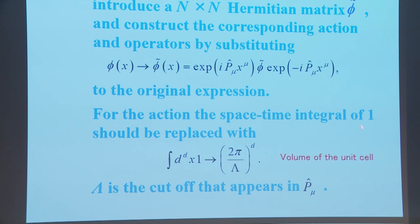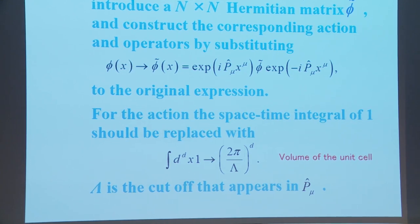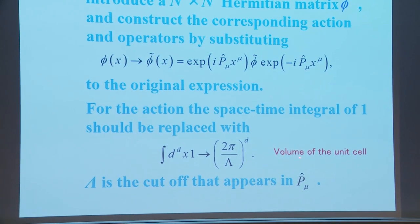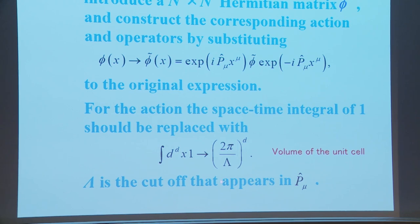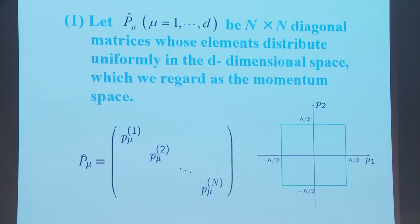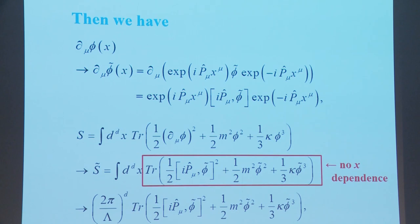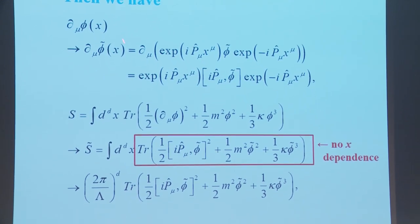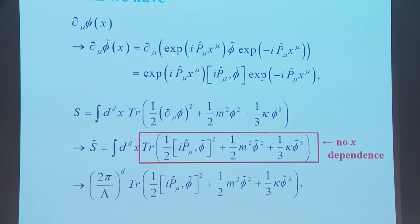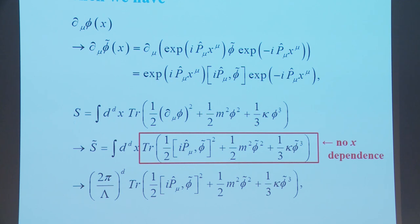For the action, the space-time integral of 1 should be replaced with a specific expression — (2π/Λ)^{2d} is the volume of the unit cell, where Λ is the cutoff appearing in P_μ. Then ∂_μφ is replaced by ∂_μφ̃, which becomes a commutator of iP_μ and φ sandwiched by exponential factors. The action is then replaced accordingly: the point is that this expression has no x-dependence, so the integration of 1 is replaced by this number. This is the reduced action.